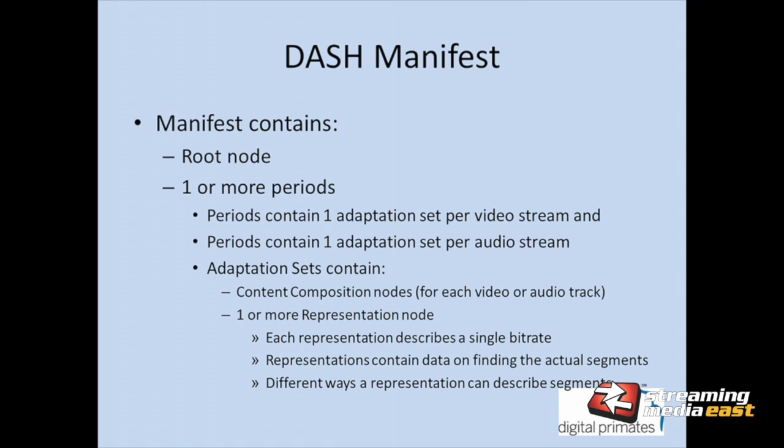Looking at the manifest structure — like any XML document, there's a root node with child tags. The initial child tags are periods, where each period describes a discrete section of the video content. The primary use case for periods is advertising: you can describe playing content for 15 minutes, then a two-minute ad break, then 14 more minutes of content, then a three-minute ad break. Each of those sections is a period, and each can have a duration assigned to it.